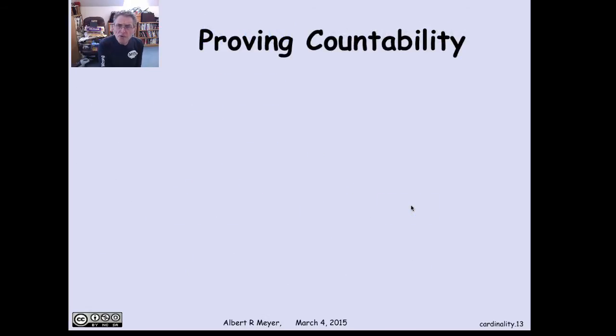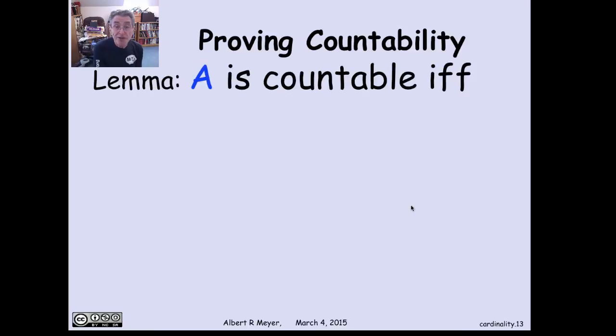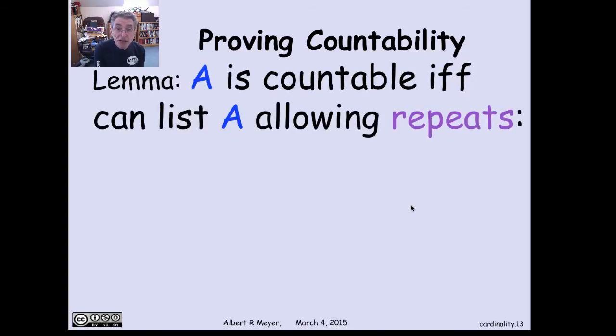When you're trying to prove countability, it's very useful to have the following lemma, which gives an alternative characterization of countability. A set A is countable if and only if you can list A allowing repeats. Our original definition is that you can list A without repeats if it's infinite, or else it's finite.